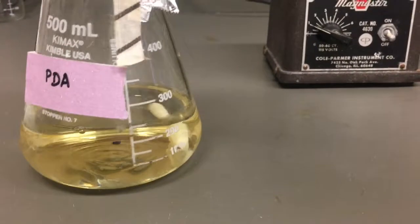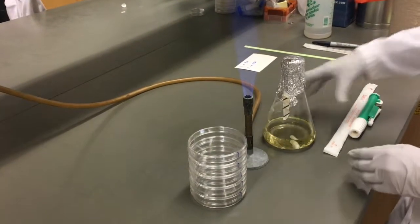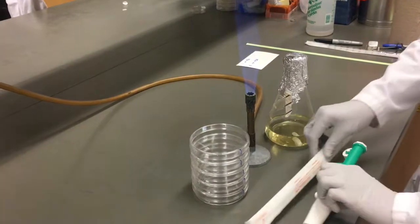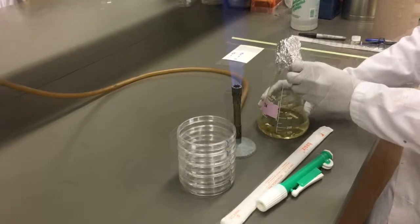Your media now appears clear. To pour any plates on your benchtop, create a zone of sterility with your Bunsen burner. Ensure anything to remain sterile stays within this zone.